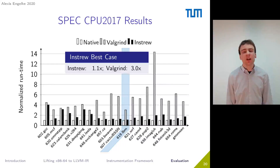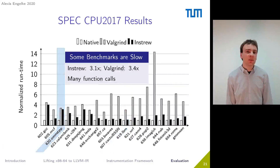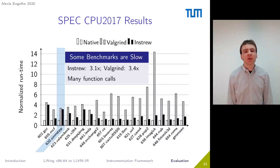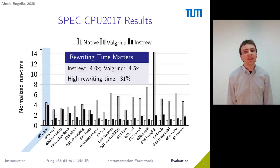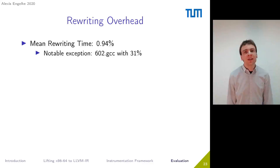However, this is not the case for all programs. For example, on the OmnetPP benchmark, INSTRU has an overhead of more than 200%, caused by the high number of function calls this benchmark performs — since function calls are optimization boundaries due to our function granularity. The slowest benchmark is GCC, wherein INSTRU slows down program execution by a factor of 4, due to an exceptionally high rewriting time of over 30%. The mean rewriting time, however, is only 0.9%, with GCC being the only exception at over 10%.